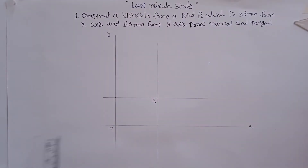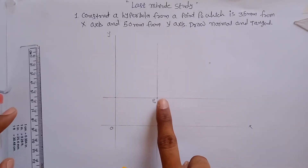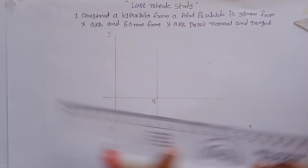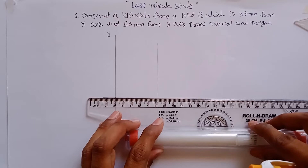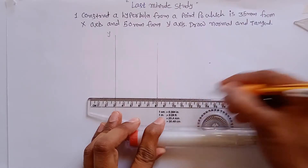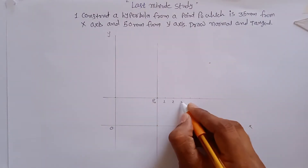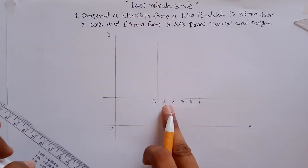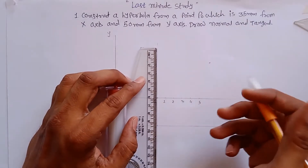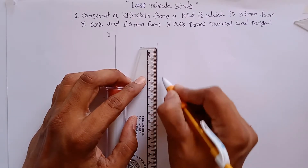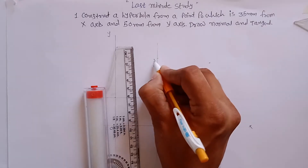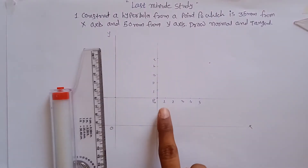To construct the hyperbola, take points somewhere on the x-axis line and the y-axis line. You can take points at any distance — I took one centimeter each — and mark five points: one, two, three, four, and five. You can take as many as you want, and the spacing doesn't have to be one centimeter every time.